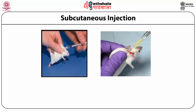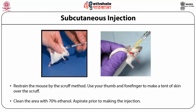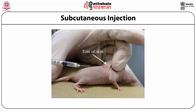The second most common injection is subcutaneous. Restrain the mouse by the scruff method — using thumb and forefinger, make a tent over the scruff region. Clean the area with 70% ethanol. Aspirate to confirm no aspirate is coming back, confirming the needle is in the subcutaneous region. This figure shows exactly how to inject subcutaneously. In nude mice, the same tenting technique is used to inject cancer cells or cell lines subcutaneously.